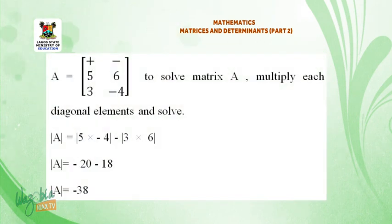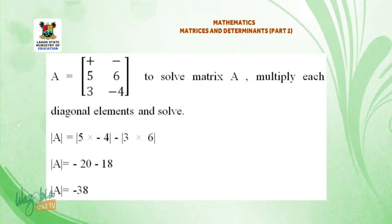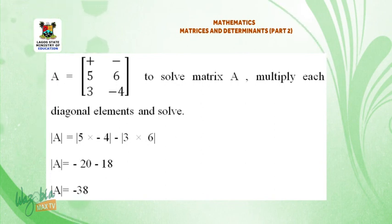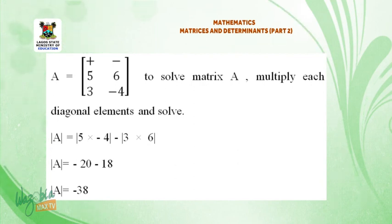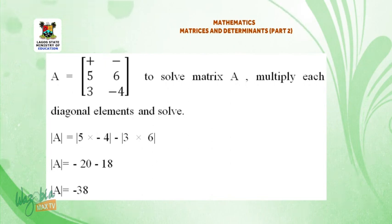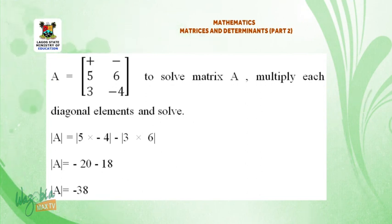A is equal to the matrix: 5, 6, 3, minus 4. To solve, multiply each diagonal element. Determinant of A equals (5 × minus 4) minus (3 × 6), which equals minus 20 minus 18. Therefore, determinant of A equals minus 38.